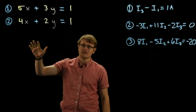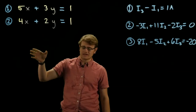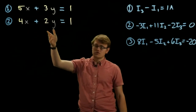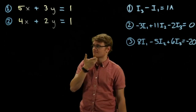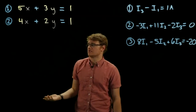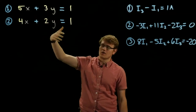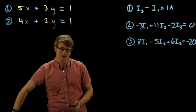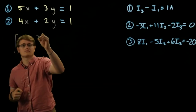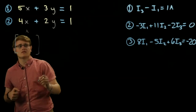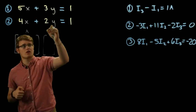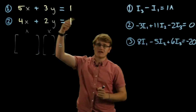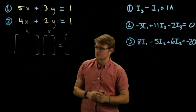So the first one we have is just an easy example, so we can figure out how to do it with matrices. We have the equation 5x plus 3y equals 1, and then 4x plus 2y equals 1. We want to solve for x and y. In a normal system of equations we would eliminate either x or y and substitute, but here all we have to do is make a coefficient matrix, which we'll call A, a variable matrix, which we'll call X, and a solution matrix — all the constants on the right-hand side — which we'll call B.